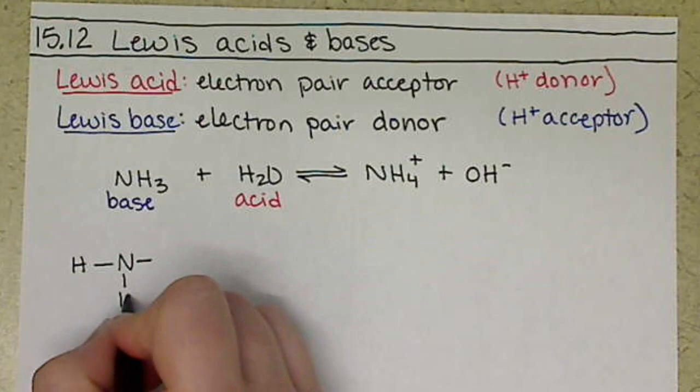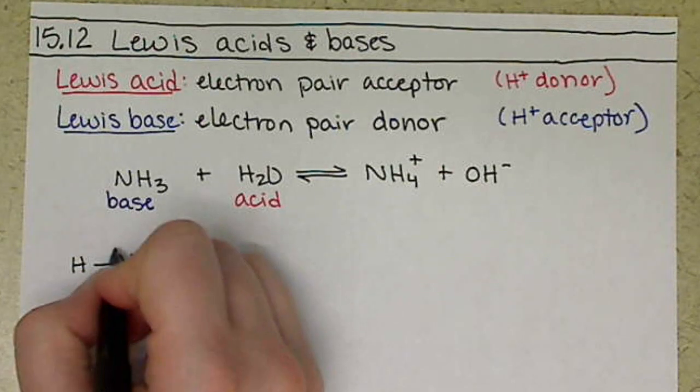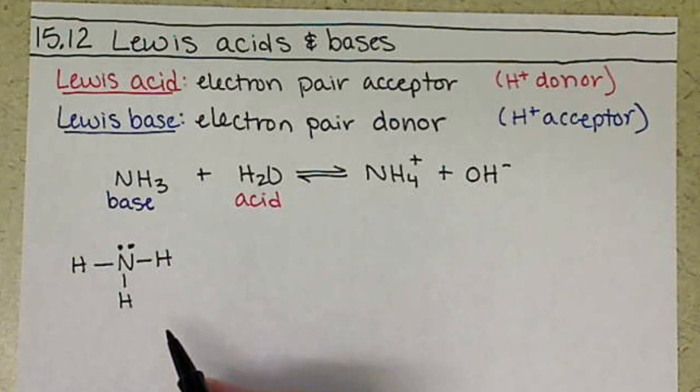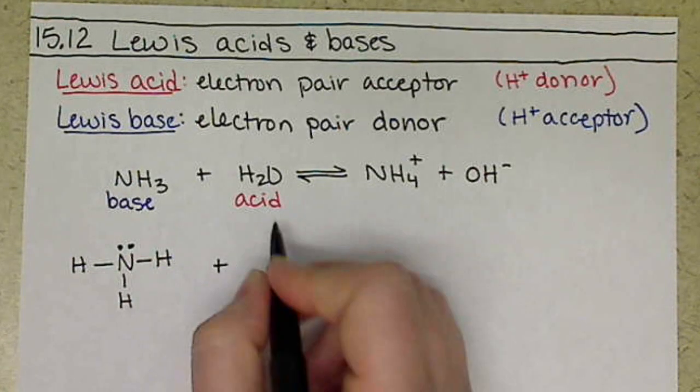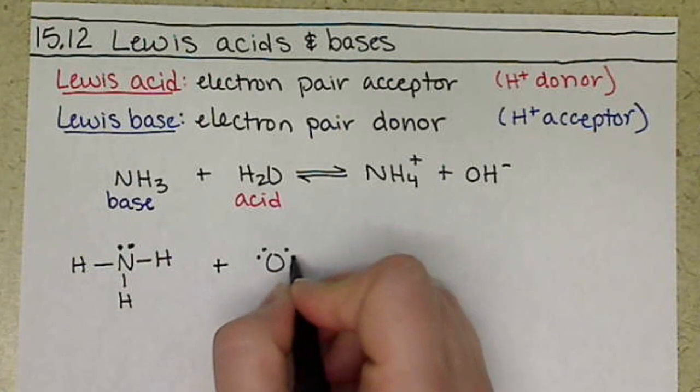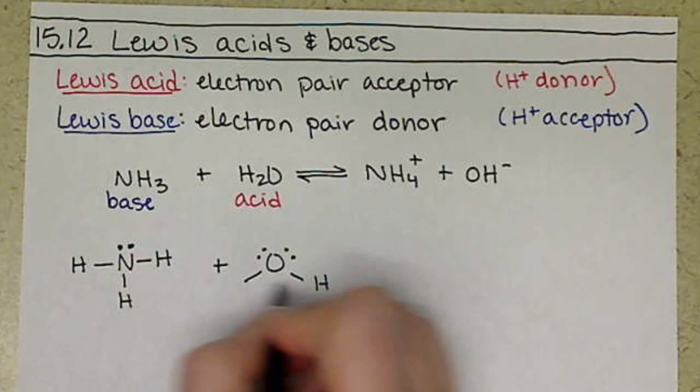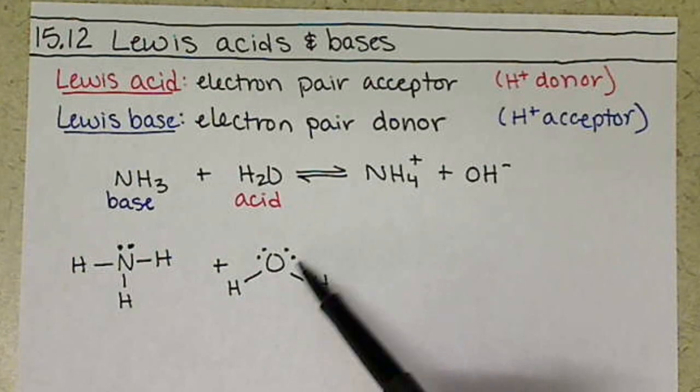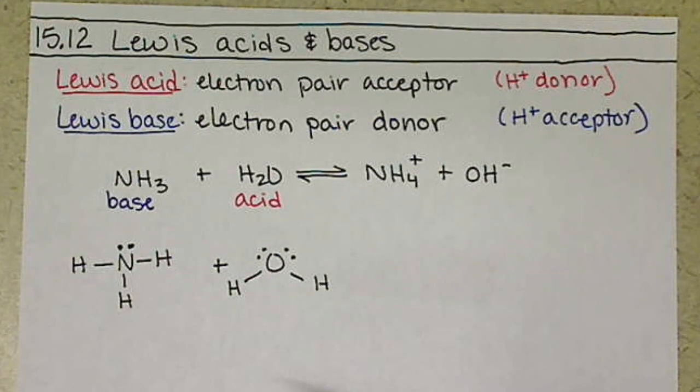So if we look at ammonia here, our NH3, we have a lone pair of electrons on the nitrogen. Then for our water, we have oxygen in the center with two lone pairs of electrons.